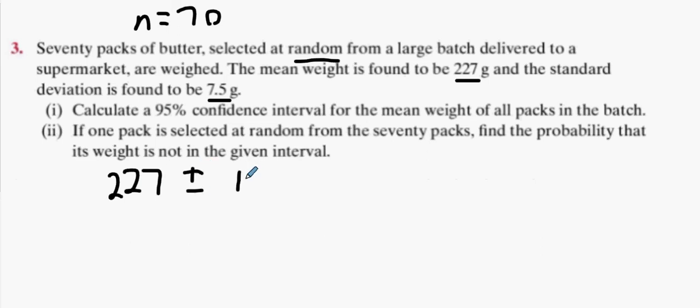We're going to do 227 grams plus or minus 1.96 times the standard error. And what is the standard error again? It's sigma over root n. We're going to put 7.5 over root 70 into the calculator.